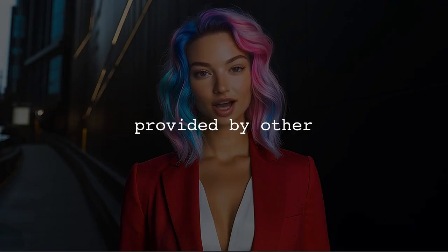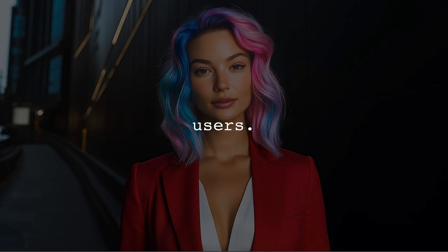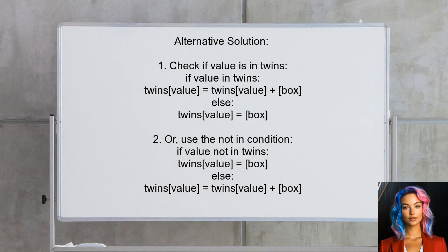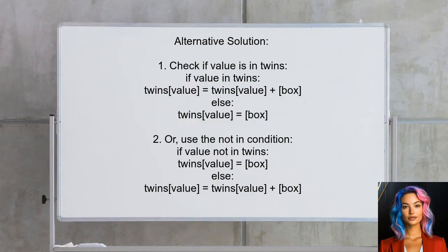Now let's look at the answers provided by other users. An alternative approach suggests using a standard if-else structure: check if the value is in the twins dictionary — if it is, append the box to the existing list; if not, create a new list with the box.